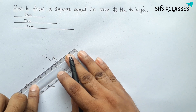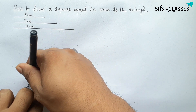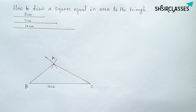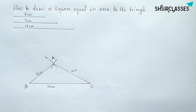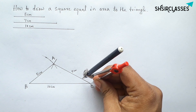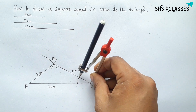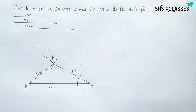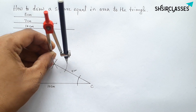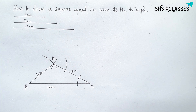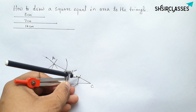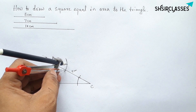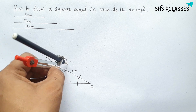Join A to C and A to B to complete triangle ABC, where AB equals five centimeters and AC equals seven centimeters. Next, draw a line through point A that is parallel to BC by taking any length, drawing an arc, placing the compass on point A with the same length, and drawing another arc. Measure the angle distance and cut the arc to establish the parallel line.